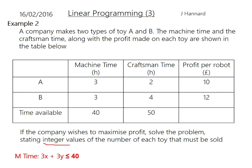For machine time, letting x equal the number of toy A's and y equal the number of toy B's, we get 3x + 3y must be less than 40. Similarly, 2x + 4y is less than 50. And 10x + 12y equals your profit, so P = 10x + 12y. None of those should have spooked you if you've watched the first two parts — it's really about picking apart the question and understanding what it's telling you.